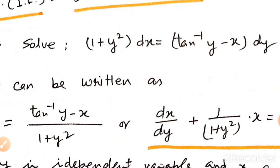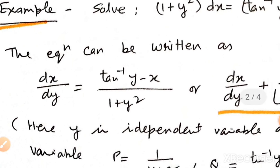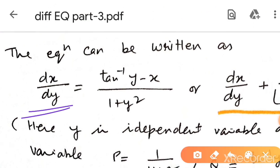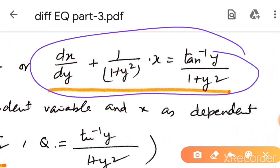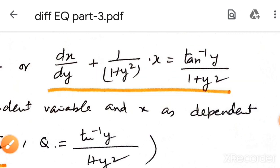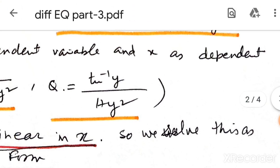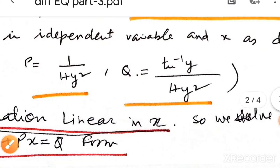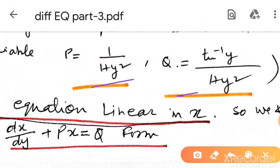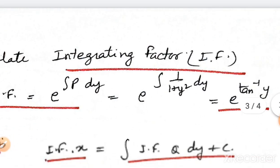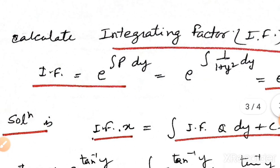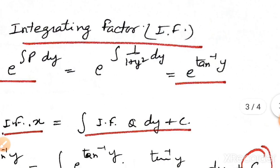Writing as dx over dy, we can put this equation in this form: dx over dy, this value is p into x, and this is the dependent variable y.